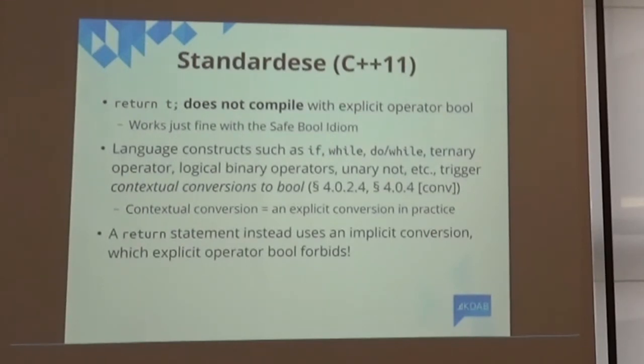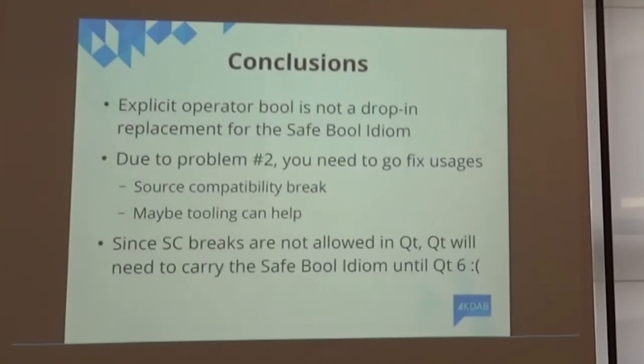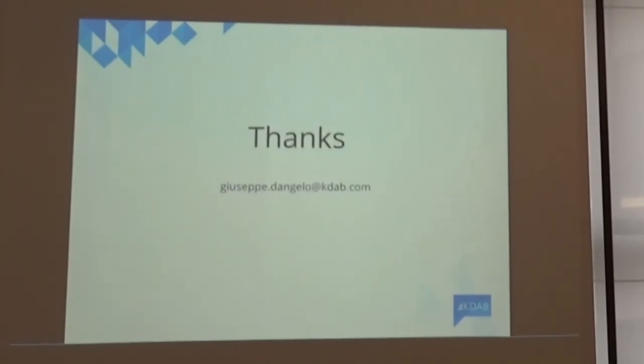And unfortunately, we use this all over the place in Qt. So, the solution is, of course, straightforward. Just go there, make the cast to bool. However, this means that I cannot just go there and replace the safe bool idiom with explicit operator bool. I cannot force this change onto my users. And, since source compatibility breaks are not allowed in Qt, Qt will ship the safe bool idiom for the next foreseeable future, which means probably, like, 2020 or something like that. But, so, for 22 years of long history of safe bool idiom. Yeah, that's it. Thank you.